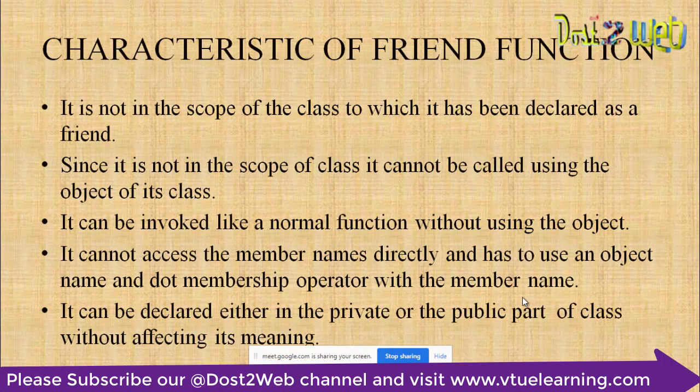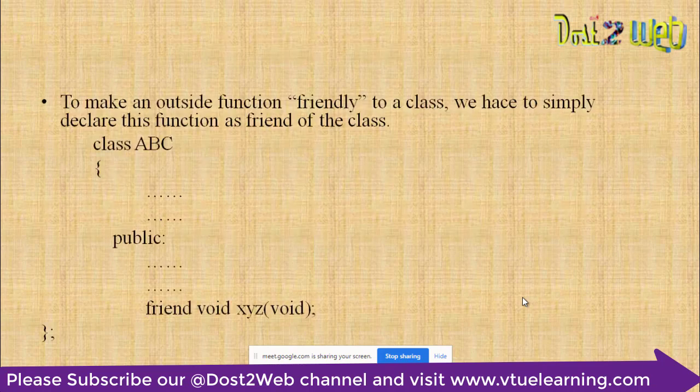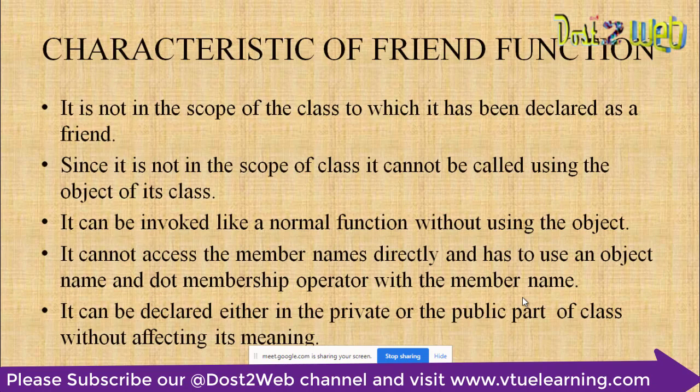A friend function is similar to a normal member function, but with the keyword 'friend' added. Any member data declared as private that you want to access from outside the class must be accessed using a friend function, not a normal member function. The syntax includes the keyword 'friend', followed by the return type, function name, and arguments.